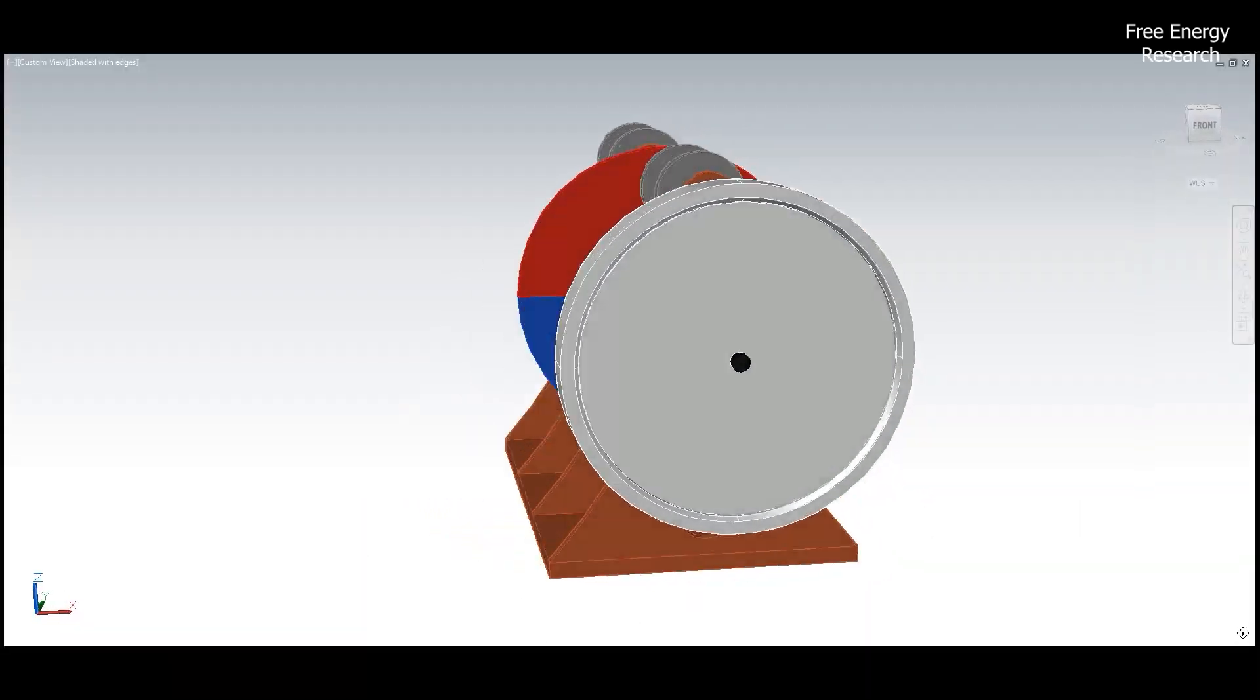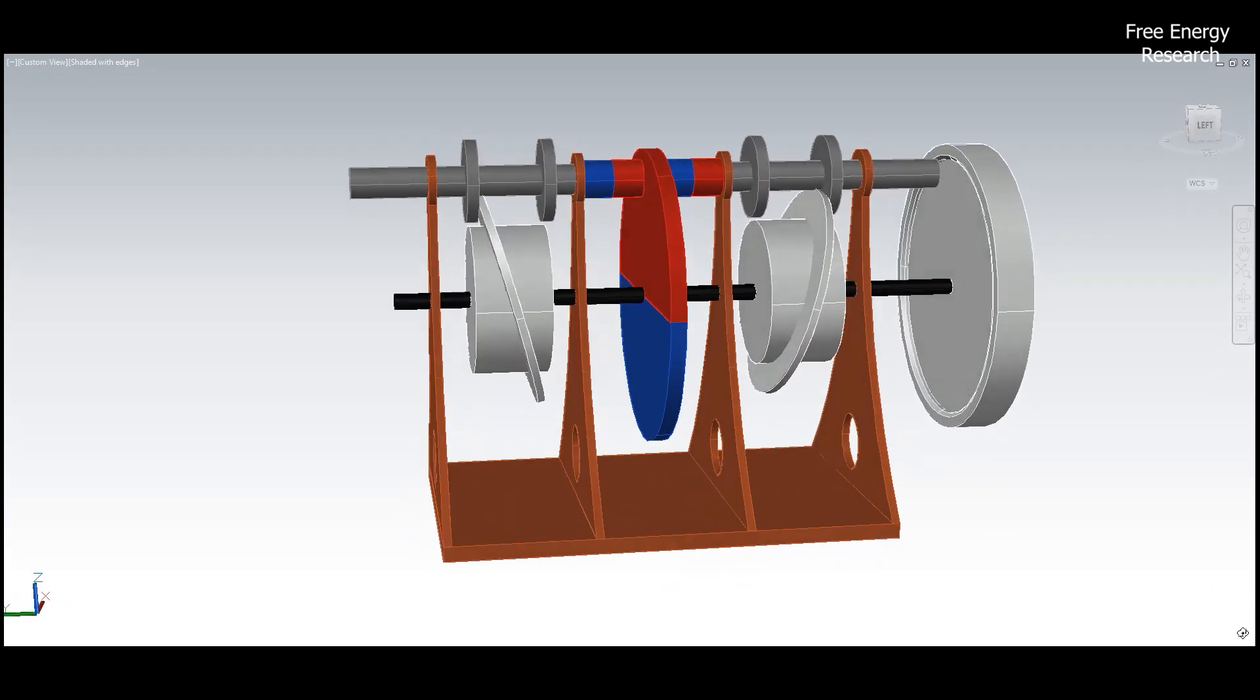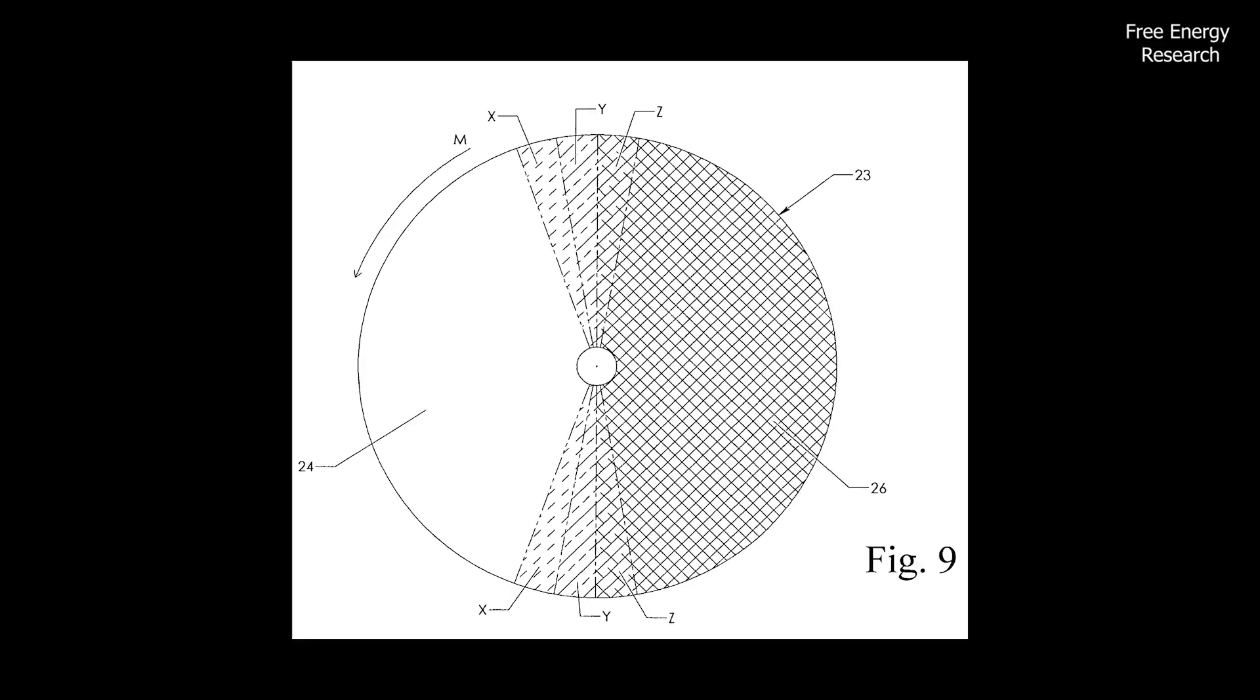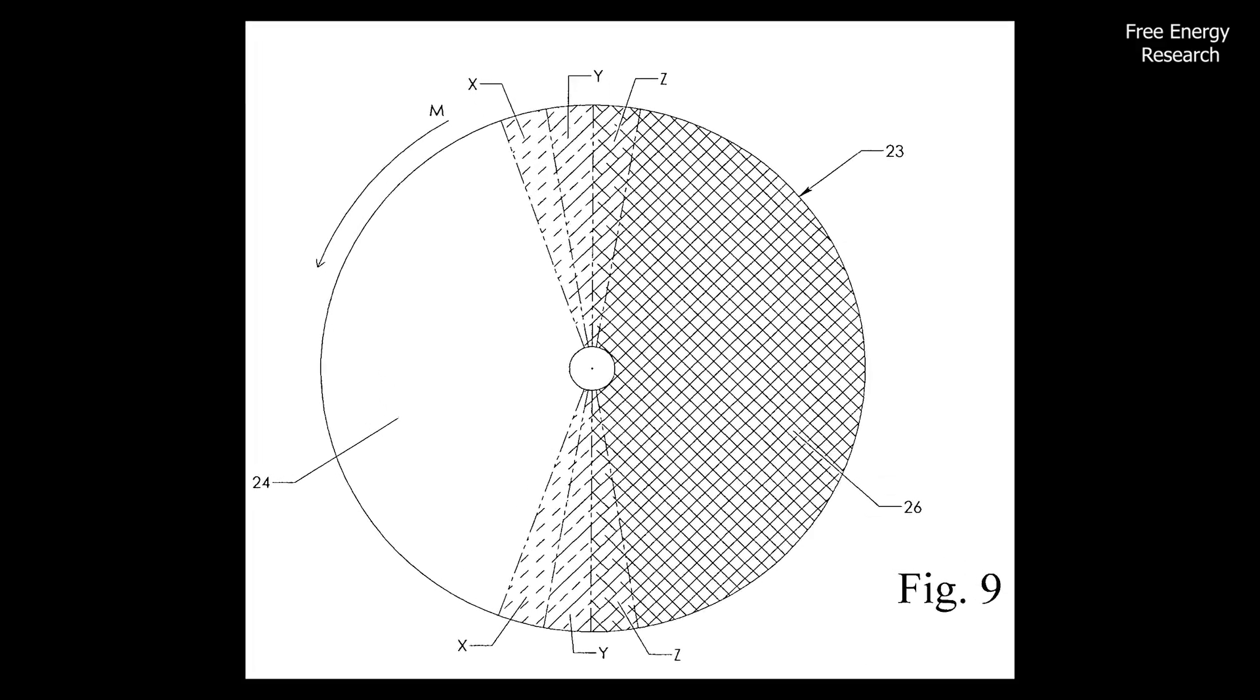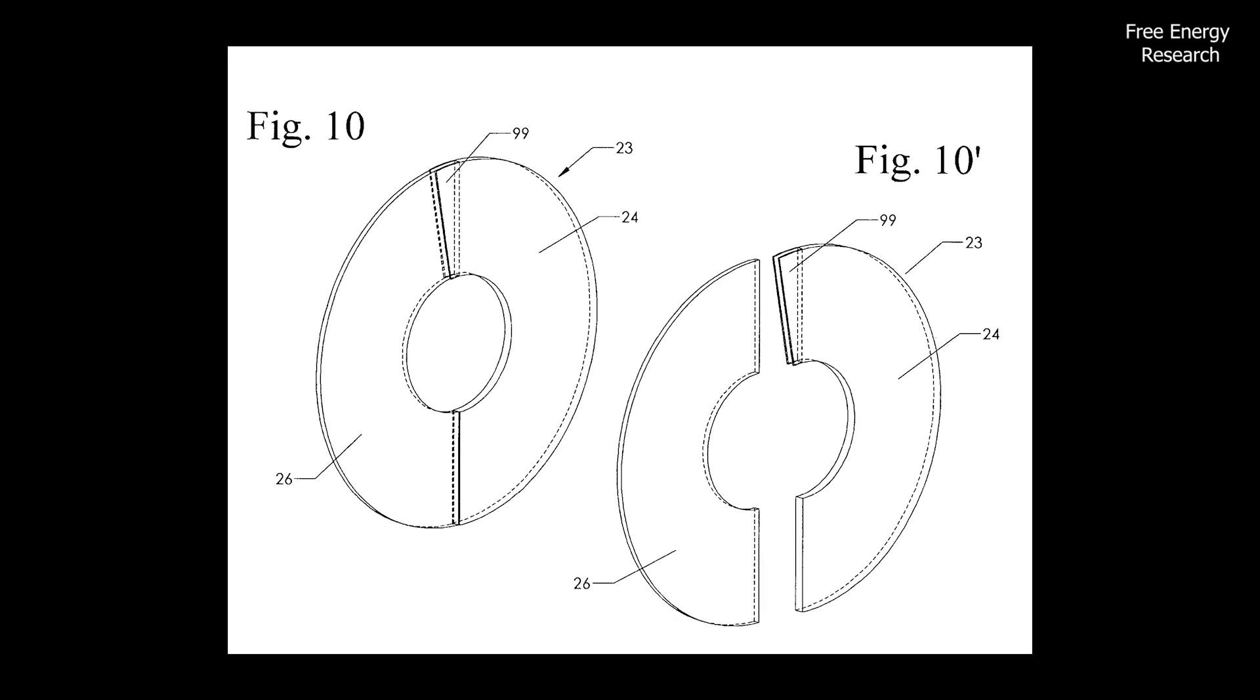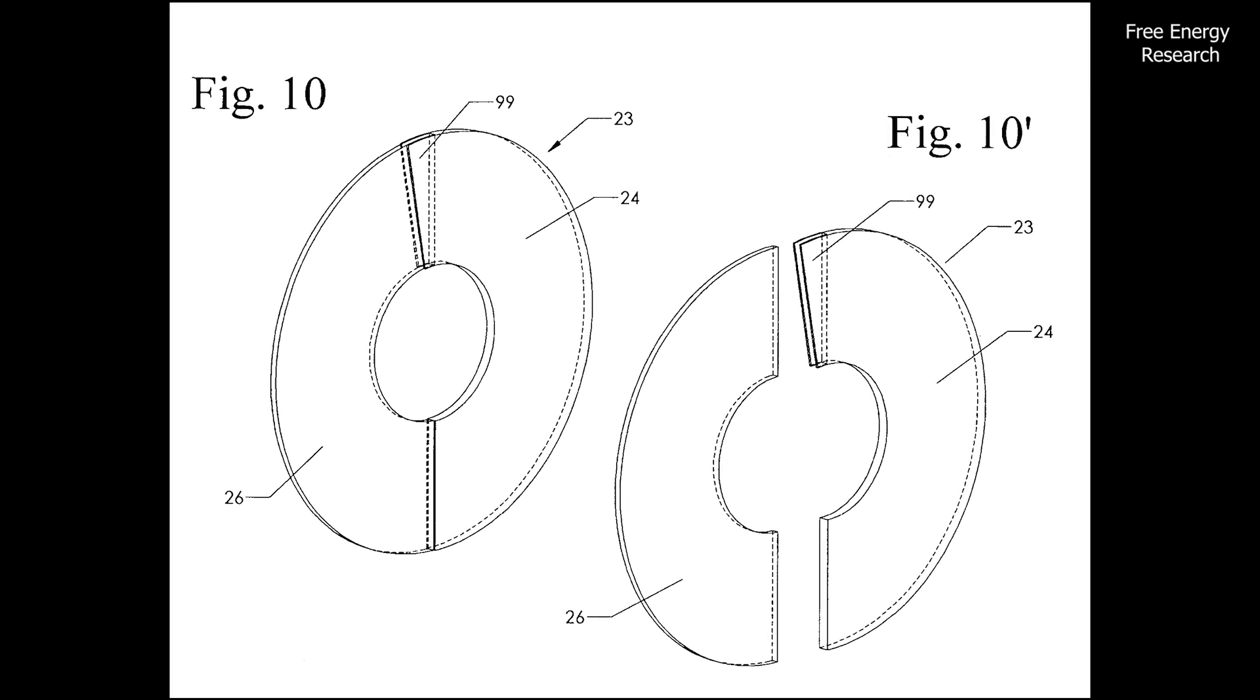It's a carefully choreographed performance of magnetic forces at play. The variable magnetic field conductor, highlighted in figure 9 and figure 10, with its distinct regions of more and less magnetically conducting portions, adds a layer of sophistication to the magnet engine.